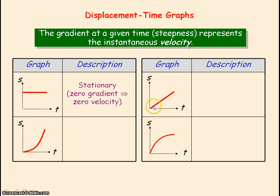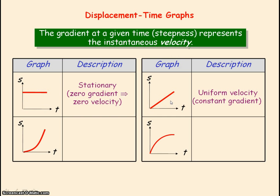For a straight line that is diagonal, because it's a straight line, the gradient is constant. So that means the velocity is constant.